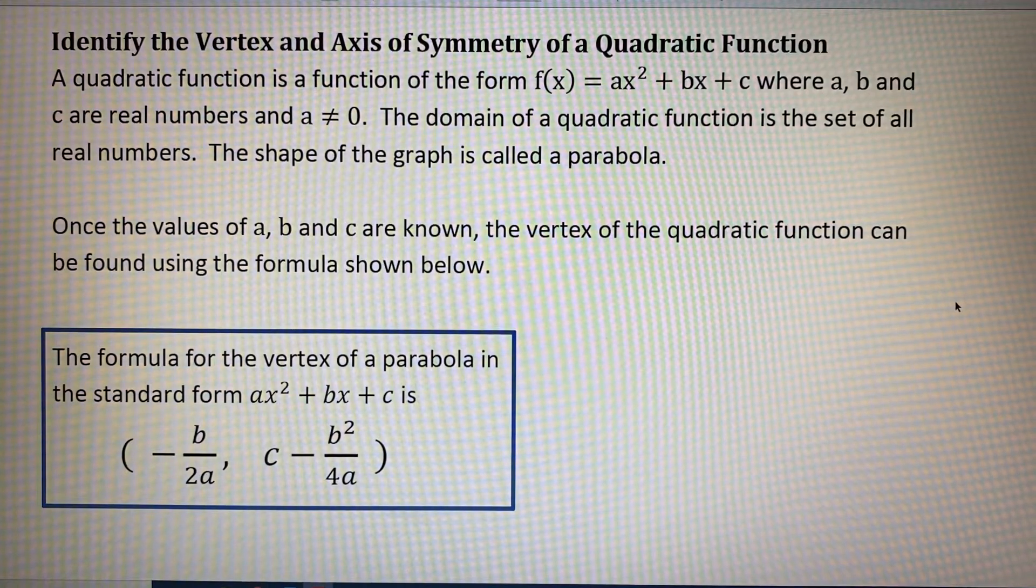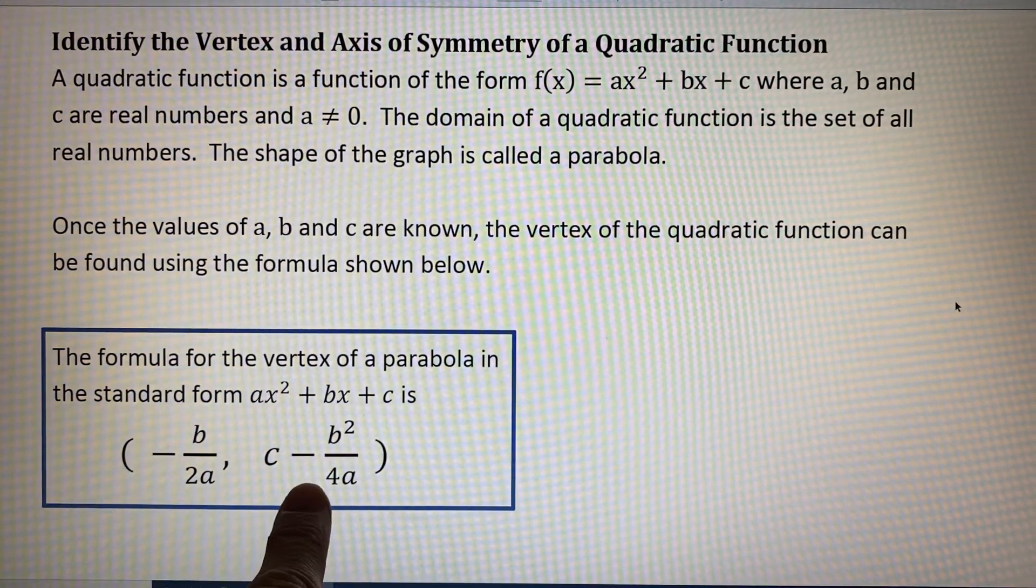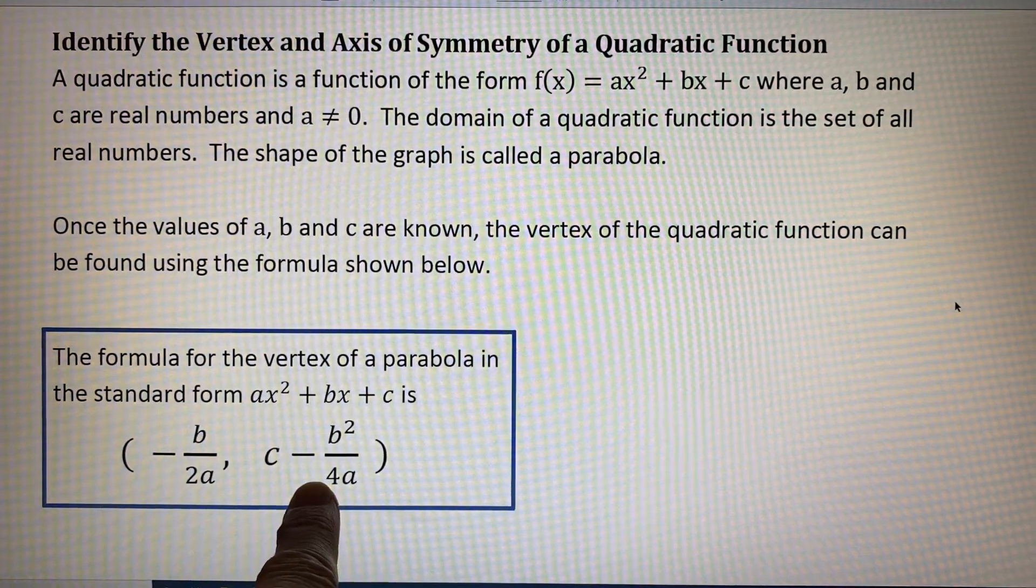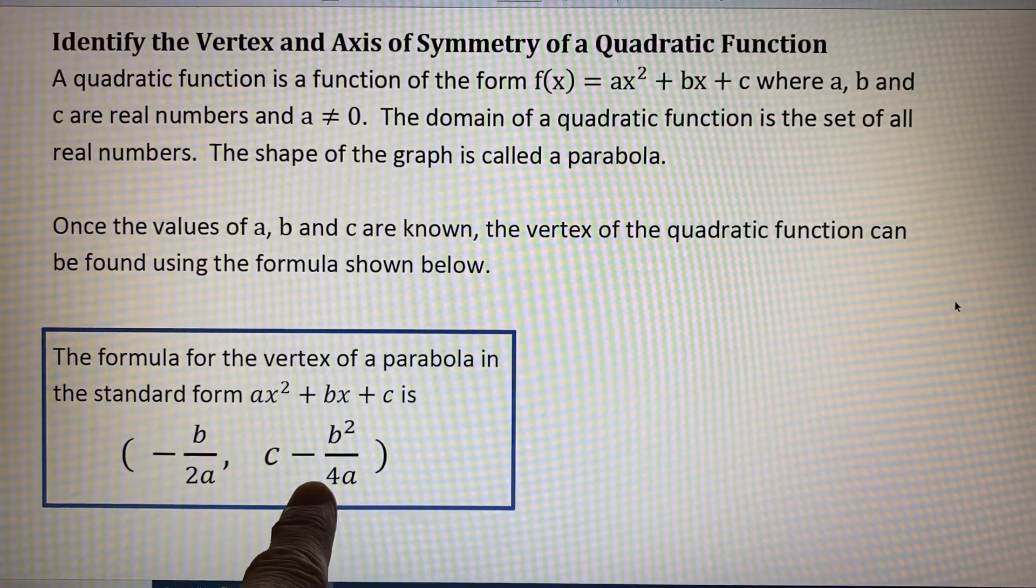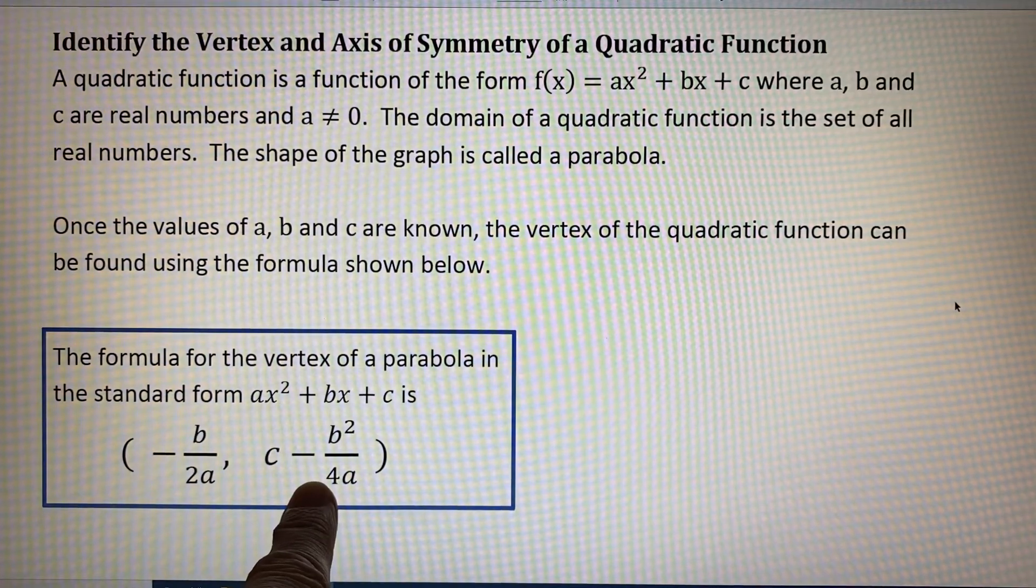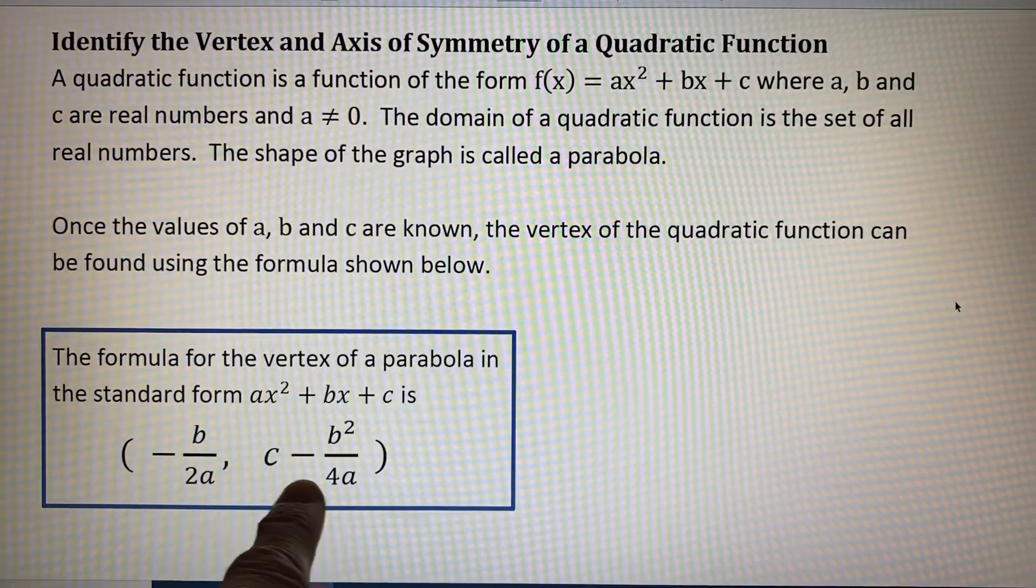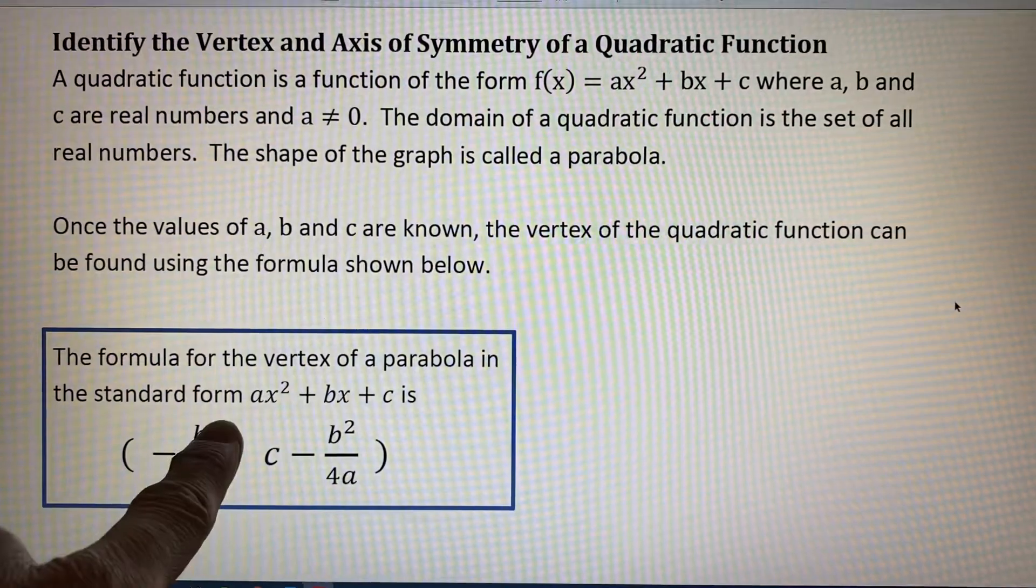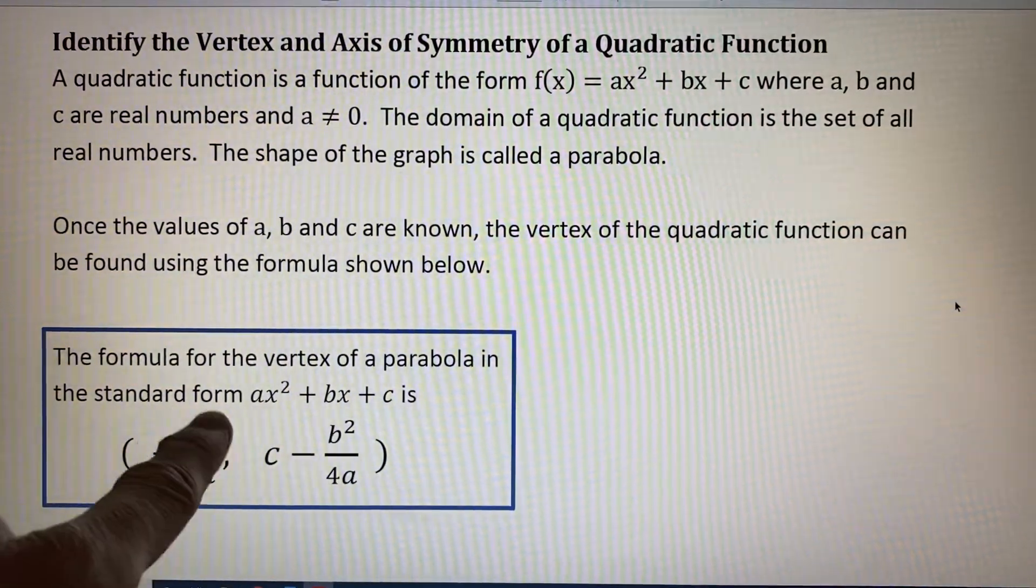In other textbooks, this part of the vertex is sometimes written as f of negative b over 2a. And what they mean by that is that you would find the x value using this formula, opposite b over 2a.